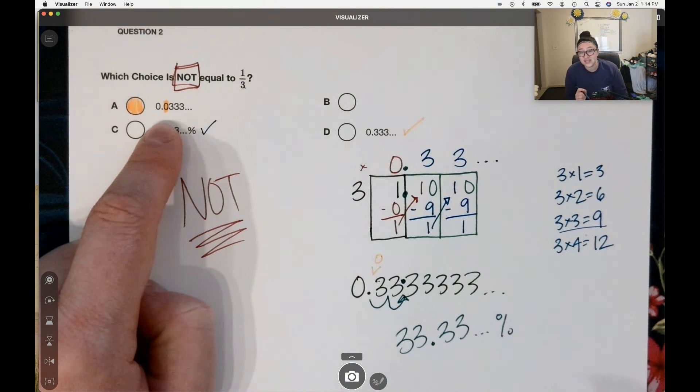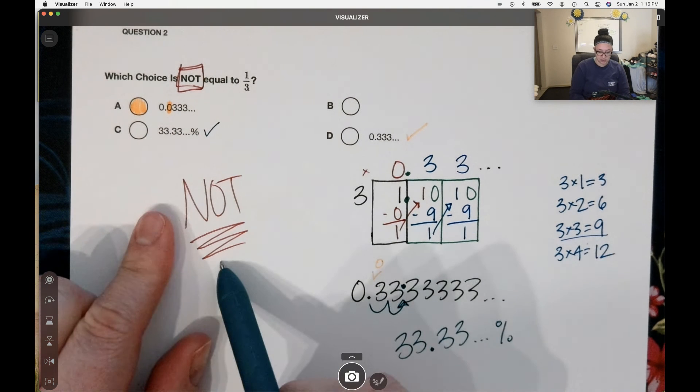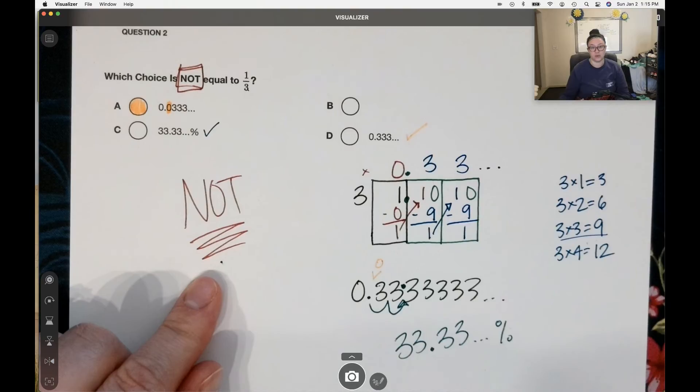But that one little zero, it looks so close, it's hard to see if you're not looking closely. Take the time, slow down. And again, we're trying to figure out what does not equal one-third.